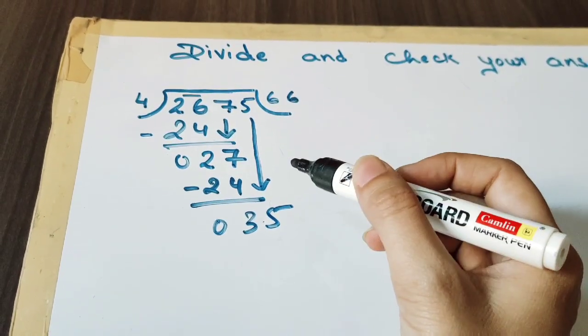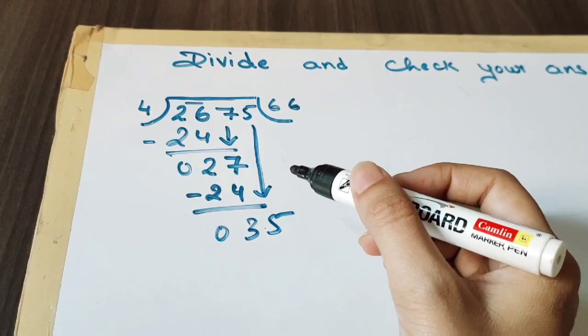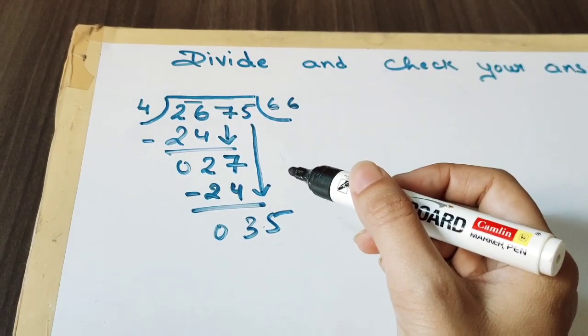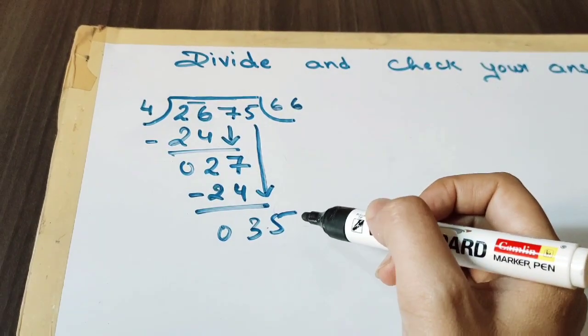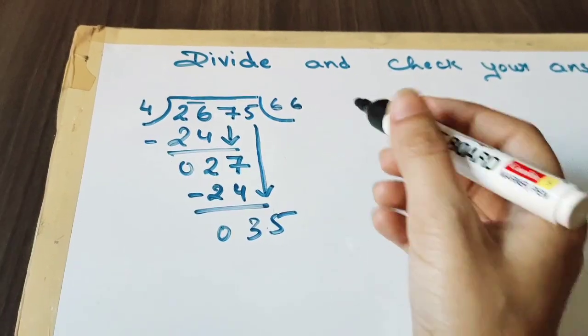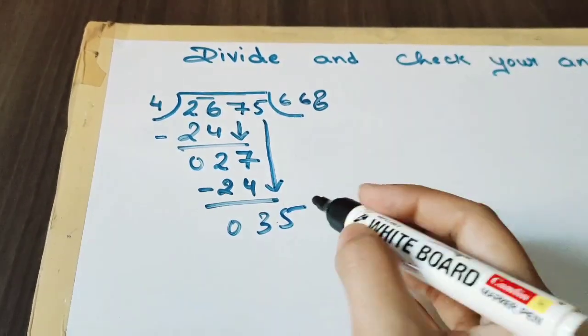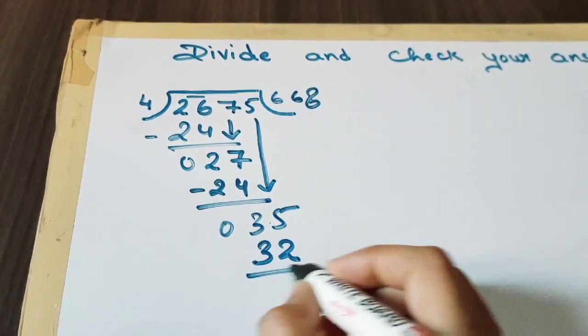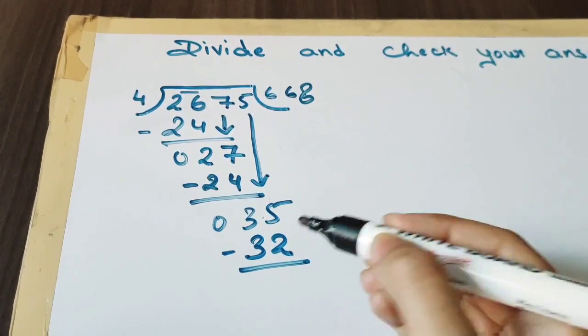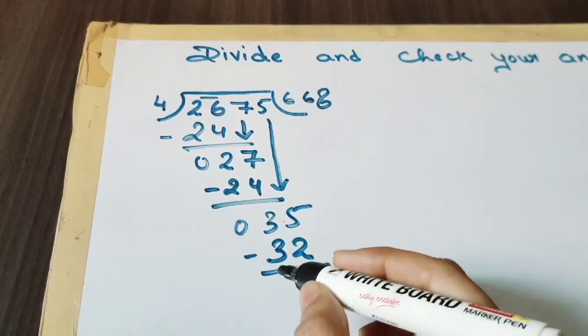And 4 times 9 is 36. So 36 is bigger number, so now we have to take it by 8 times, that will be 32. So now again we will subtract: 5 minus 2 is 3, 3 minus 3 is 0.